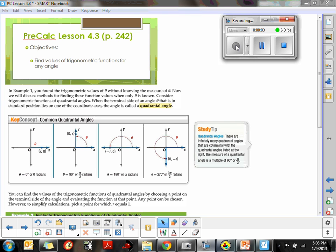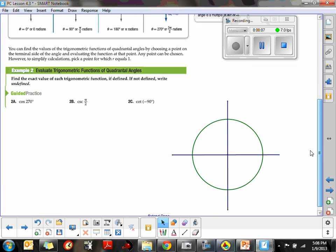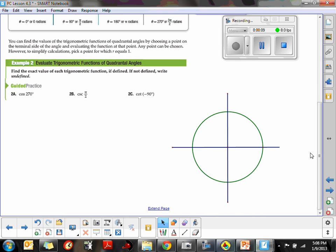The next examples are finding the trig values of quadrantal angles. As I went into great detail in another part of this lecture, quadrantal angles are special angles that lie on the x and y axes.